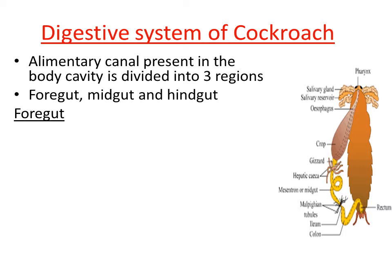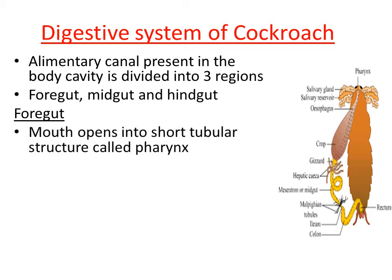The foregut is the first region of the alimentary canal. It starts with the mouth — the part from where food is taken in. The mouth is followed by a short tube-like structure called pharynx.